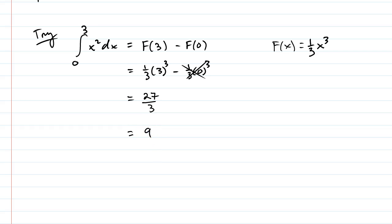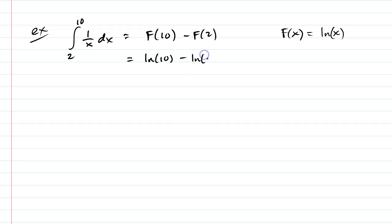Let's do another example together. The integral from 2 to 10 of 1 over x dx. This is going to be the same as the antiderivative at 10 taking away the antiderivative at 2. The antiderivative for this integral is ln of x, because the derivative of ln of x is 1 over x. So this is ln of 10 minus ln of 2.